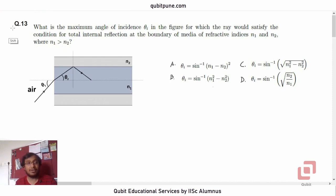This question is based on geometrical optics or ray optics and specifically it is based on Snell's law. Let's read the statement: What is the maximum angle of incidence theta_i in the figure for which the ray would satisfy the condition for total internal reflection at the boundary of the media of refractive indices n1 and n2 where n1 is greater than n2?